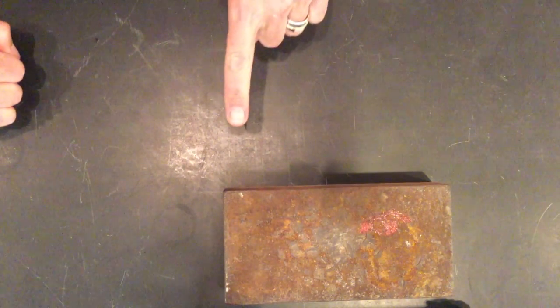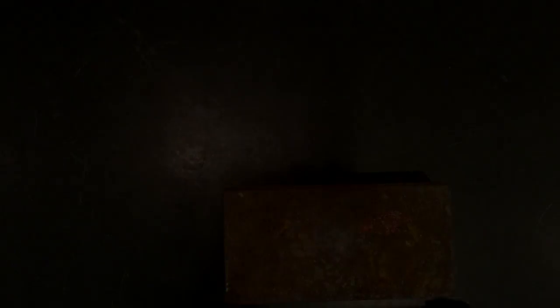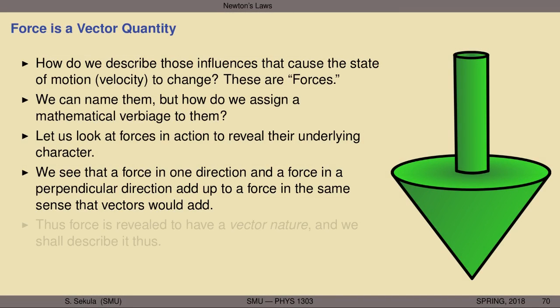Now I'll reset the brick and put the knuckles of both hands on it, pushing in those perpendicular directions simultaneously. The brick moves not only in the horizontal or only in the vertical direction, but in a combination of both — exactly like adding two vectors with components along x and y. From this simple experiment we can see that a force along one axis and a force perpendicular to that along another add up in exactly the way vector quantities add.